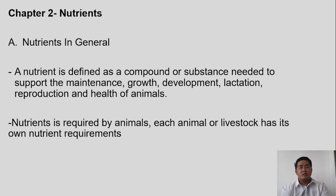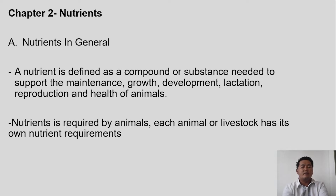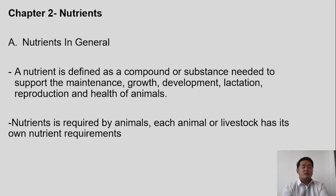Good morning ANSI students of the subject ANSI 3, which is Animal Nutrition and Feeding. I hope you are all in good health and doing well in your other subjects in Agriculture. I hope you watched the last video and understood it. We previously discussed Chapter 1: the definition of animal nutrition, the importance of animal nutrition, and the role and relationship between nutrition, animal nutrition to humans, to the population, and to the economy.